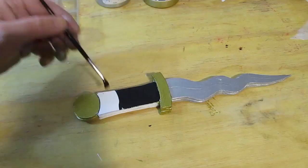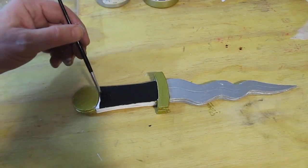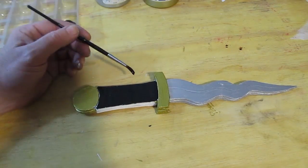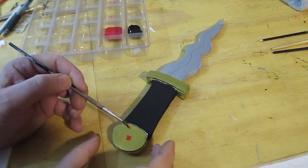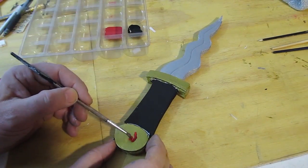Then I painted the guard and the pommel gold. And remember, if you make this project, send me a picture. I'll send you a certificate of contribution. And I'll put the picture on my website.